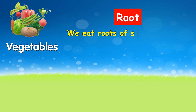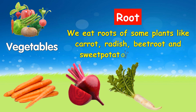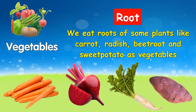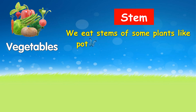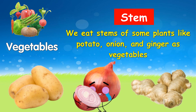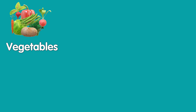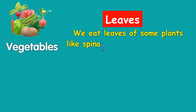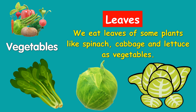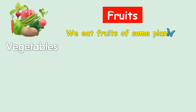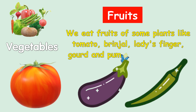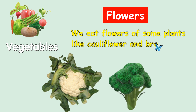Root: we eat the root of some plants like carrot, radish, beetroot and sweet potato as vegetables. Stem: we eat stems of some plants like potato, onion and ginger as vegetables. Leaves: we eat leaves of some plants like spinach, cabbage and lettuce as vegetables. Fruits: we eat fruits of some plants like tomato, brinjal and ladyfingers. We also eat flowers of some plants like cauliflower and broccoli as vegetables.